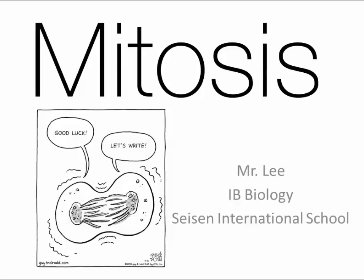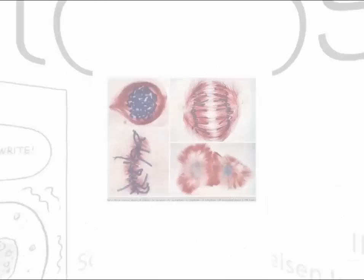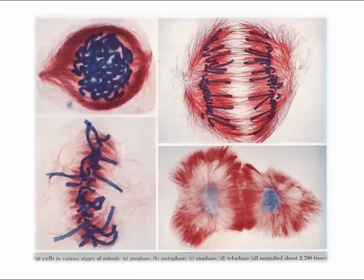Interphase is pretty big. Diagrams show it anywhere between 70 and 85% of the total amount of time. Mitosis is the specific part where you actually see it dividing, and it's pretty cool because during mitosis, you can actually see the chromosomes underneath a simple light microscope. If you stain them, it can make it a lot easier to actually see, as you can see here.